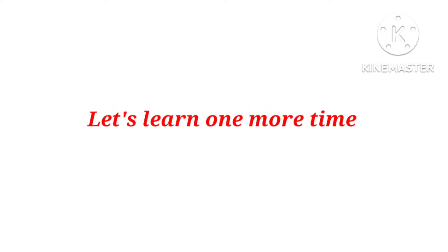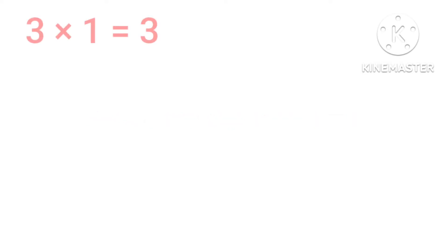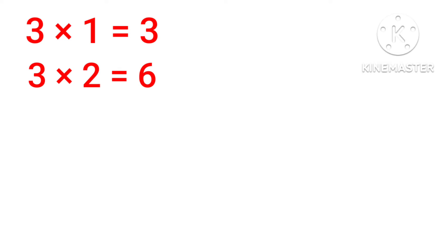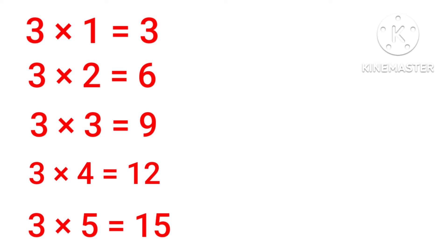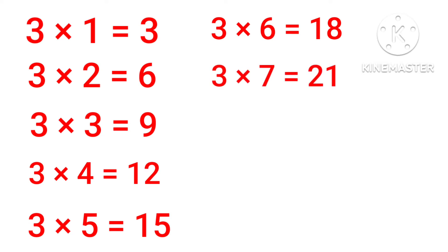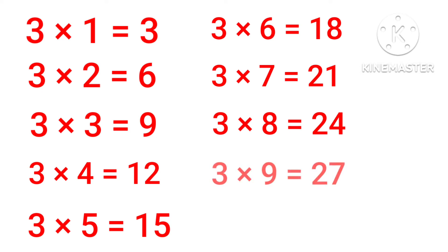Let's learn one more time. 3 1's are 3, 3 2's are 6, 3 3's are 9, 3 4's are 12, 3 5's are 15, 3 6's are 18, 3 7's are 21, 3 8's are 24, 3 9's are 27, 3 10's are 30.